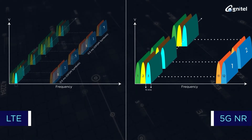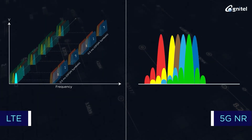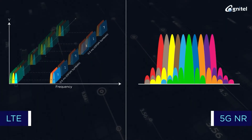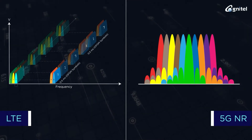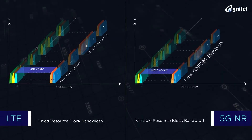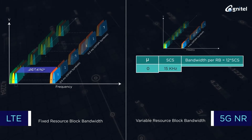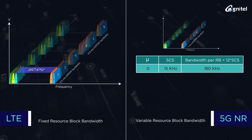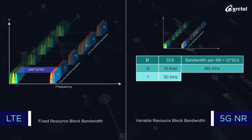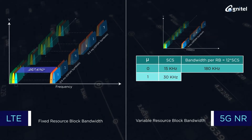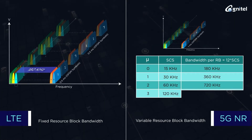In 5G NR, each slot has 14 OFDM symbols and these are transmitted in the frequency domain only, as 5G offers flexibility in transmitting multiple numerologies simultaneously in the time domain. The NR resource block bandwidth is not fixed and depends on subcarrier spacing — for μ=1, with 12 subcarriers at 30 kilohertz spacing, the bandwidth per resource block becomes 360 kilohertz, and this can be further extended to higher values of μ.